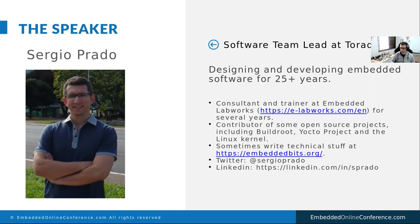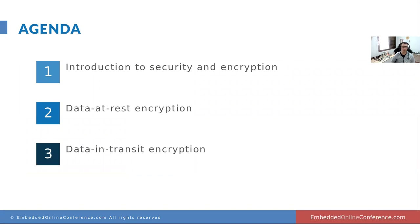Our agenda today has three main topics to cover. We're going to start with a quick introduction to security and encryption. Then we're going to talk about data at rest encryption — how we can protect the confidentiality of data stored in the device. The third topic is data in transit — how we can protect data being sent to or received from a remote server.